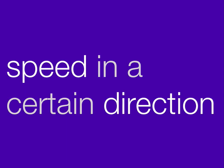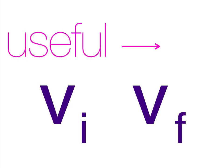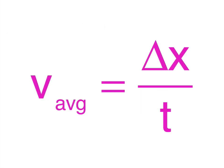Velocity is speed in a certain direction. In general, problems from a first-year physics course ask questions that deal with three pieces of velocity. The first two are the initial velocity, vi, and the final velocity, vf. The third piece is average velocity — the average speed something has when traveling in some direction. Average velocity equals the change in position divided by time. This equation is something that every physics student needs to memorize.